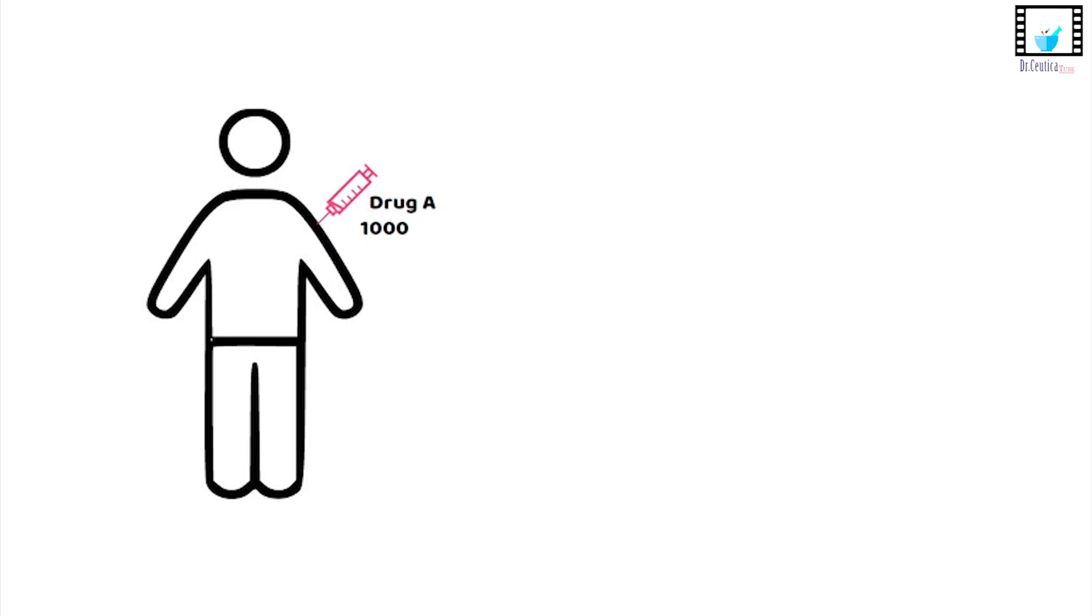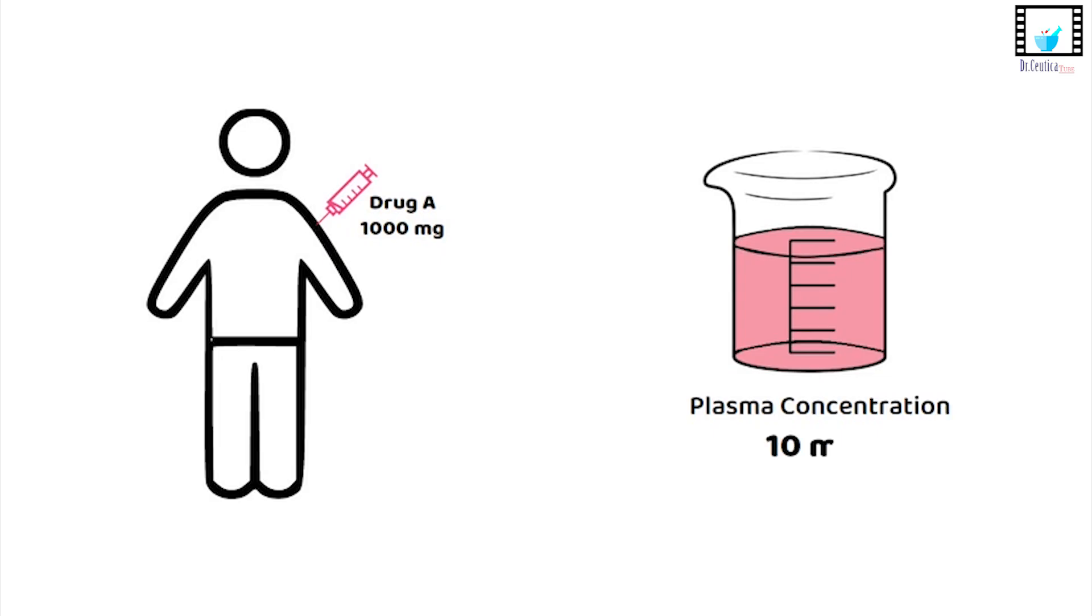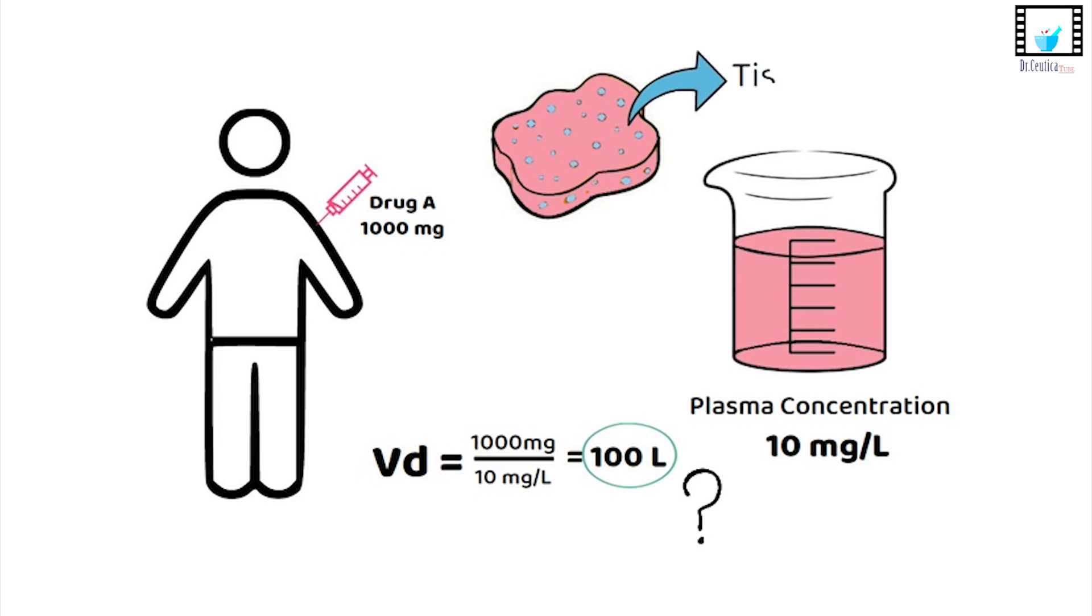Now let's take a real world example. Let's say you injected 1000 milligrams of drug A and when you measured the plasma concentration, you found that to be 10 milligrams per liter. That means the volume of distribution is 100 liters. Wow, your body doesn't even contain that much fluid. That tells us drug A must be hanging out in tissues.